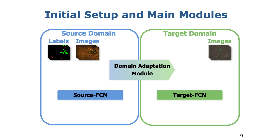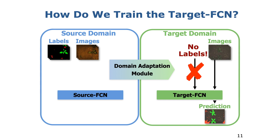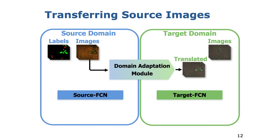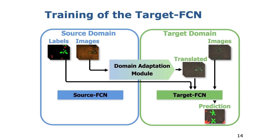We propose an unsupervised domain adaptation approach that can adapt existing segmentation systems for crop weed classification to new domains, still yielding a high classification performance. Our approach consists of two domain-specific FCNs for semantic segmentation and a domain adaptation module. We train the source FCN in a supervised way using RGB images and labels from the source domain. We cannot act in the same way in the target domain since we are missing target labels. We make use of the domain adaptation module to translate the source image towards the target domain. We finally train the target FCN in a supervised manner using the translated images in the style of the target domain alongside with copied labels from the source domain.